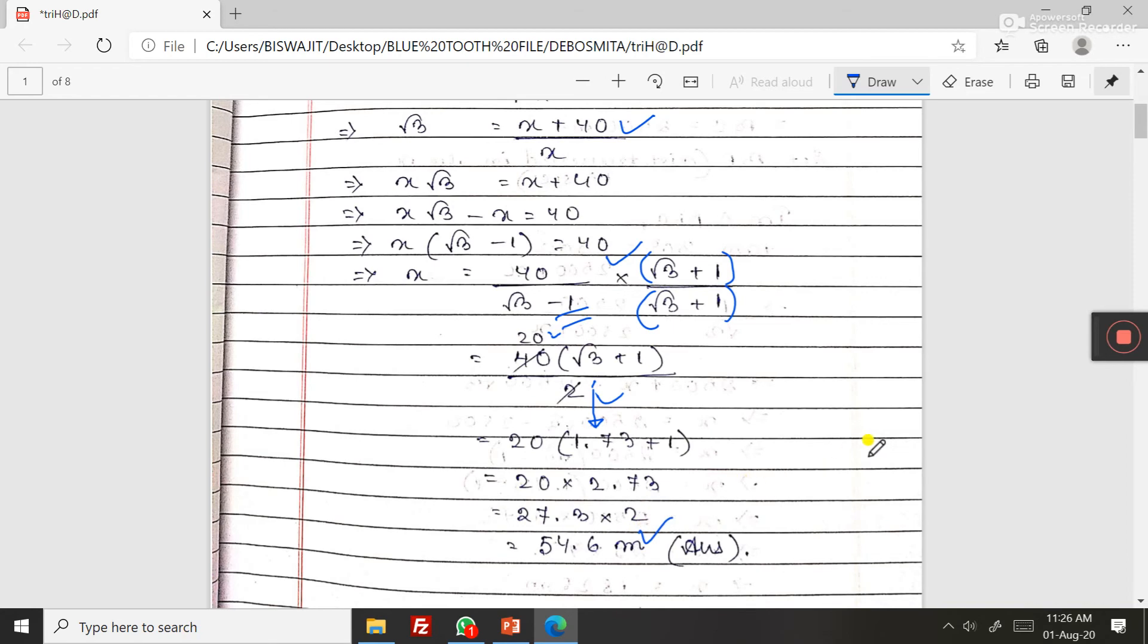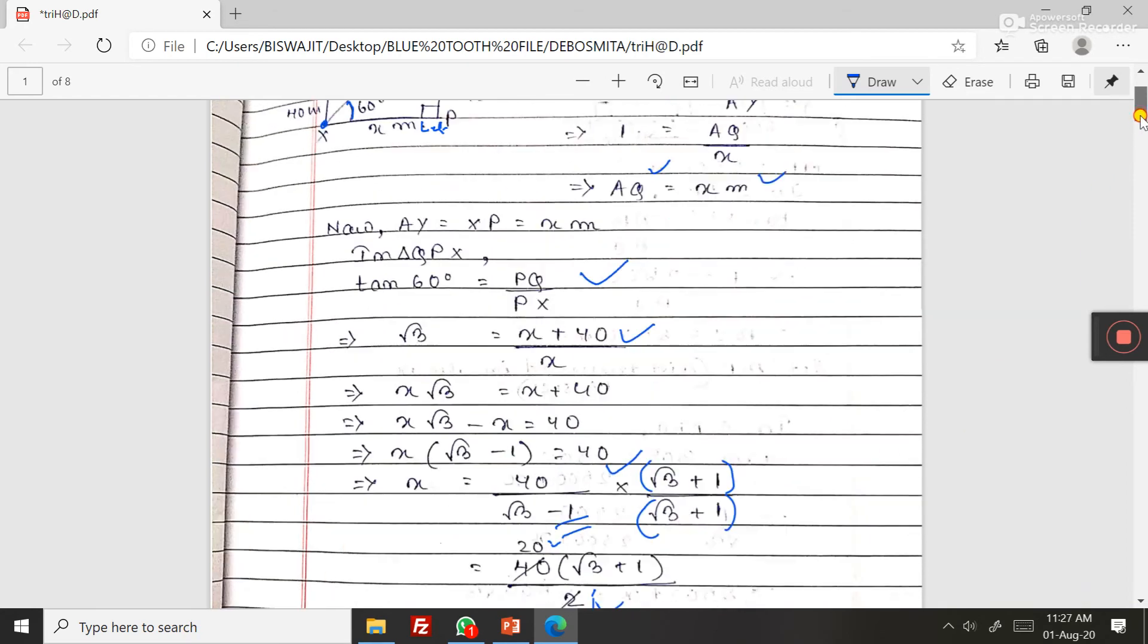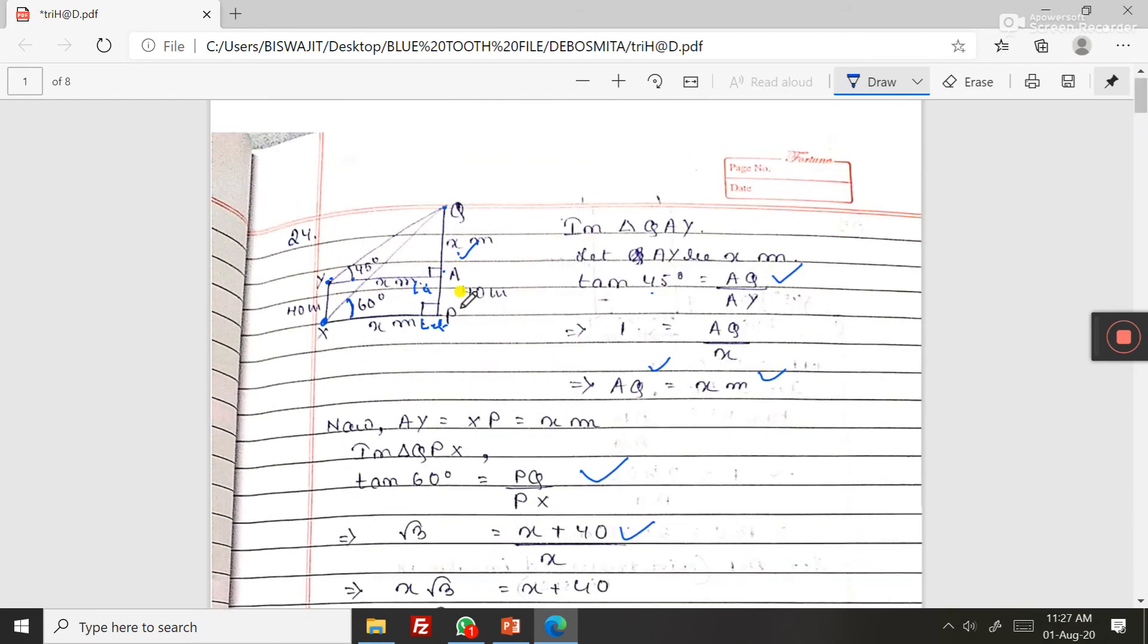But we have to find the height of the tower, that is QP. So with this x you have to add this 40.